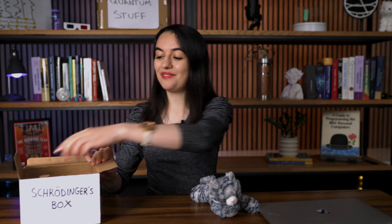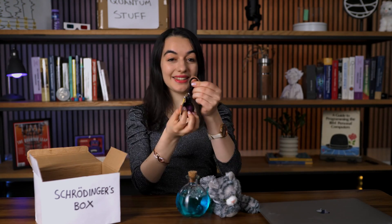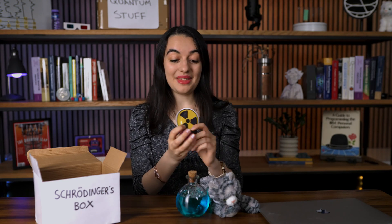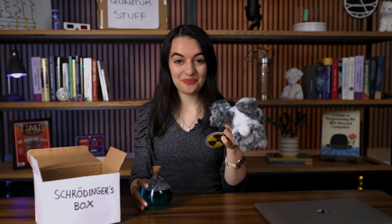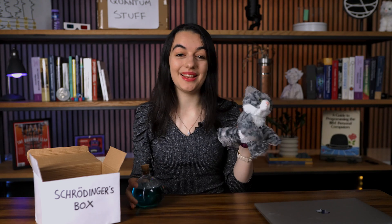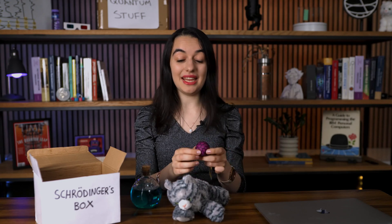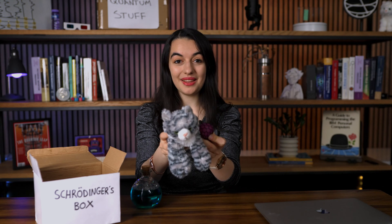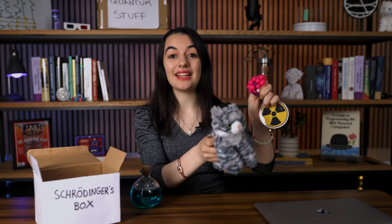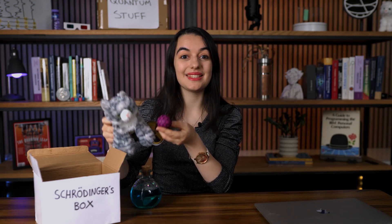In the original paradox, we imagine the cat in a box with a vial of poison, a small hammer, and a radioactive atom. If the atom decays, then it will trigger the hammer to smash open the vial of poison and the cat will die. If the atom does not decay, then the hammer will not smash open the vial of poison and the cat will stay alive.